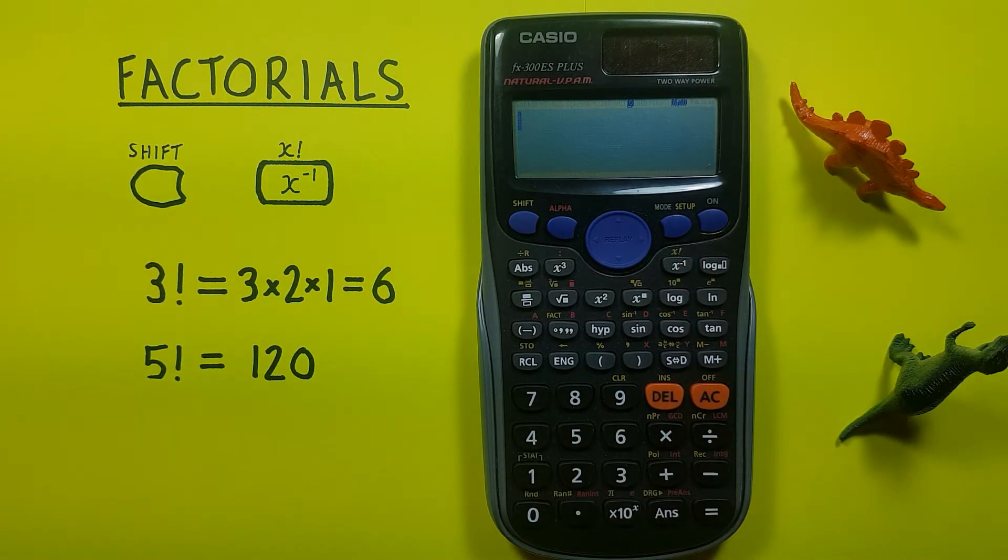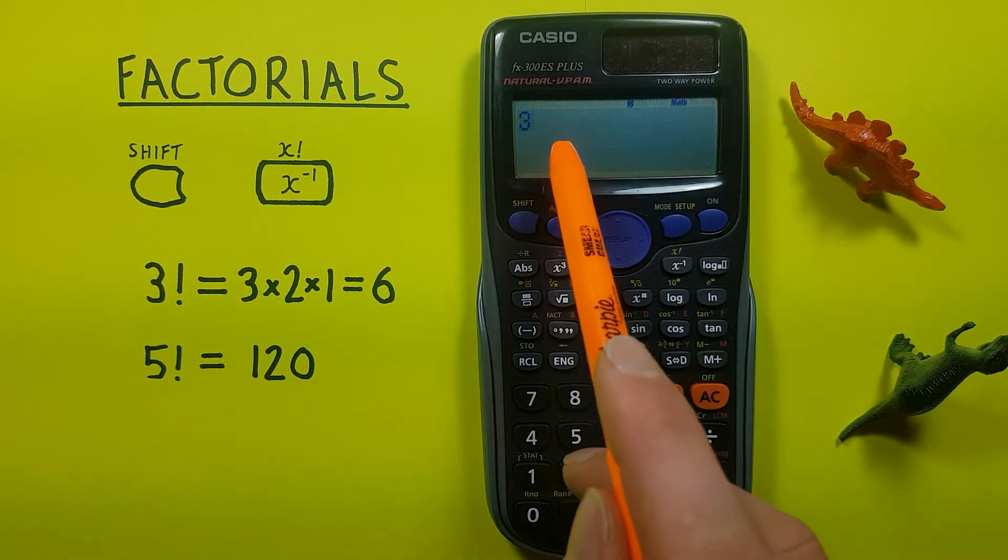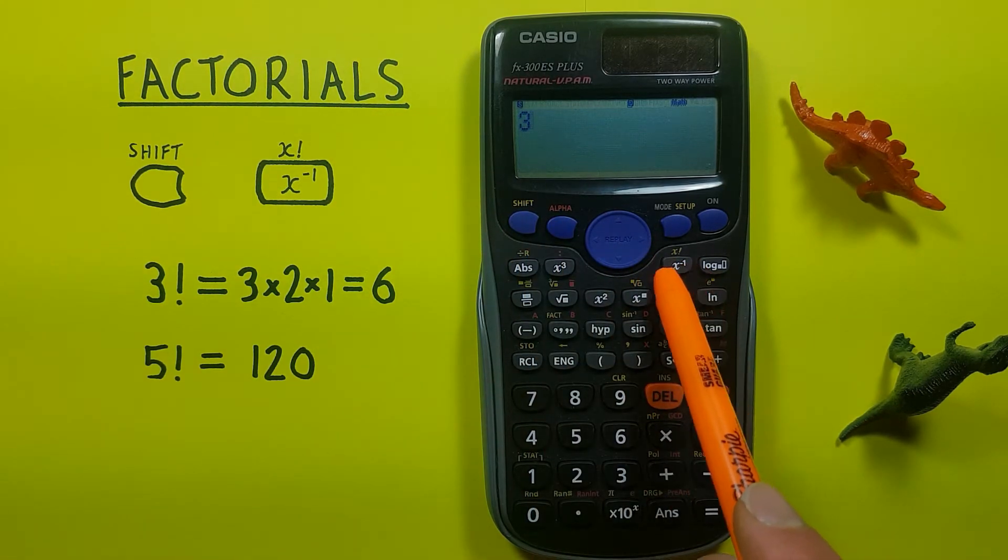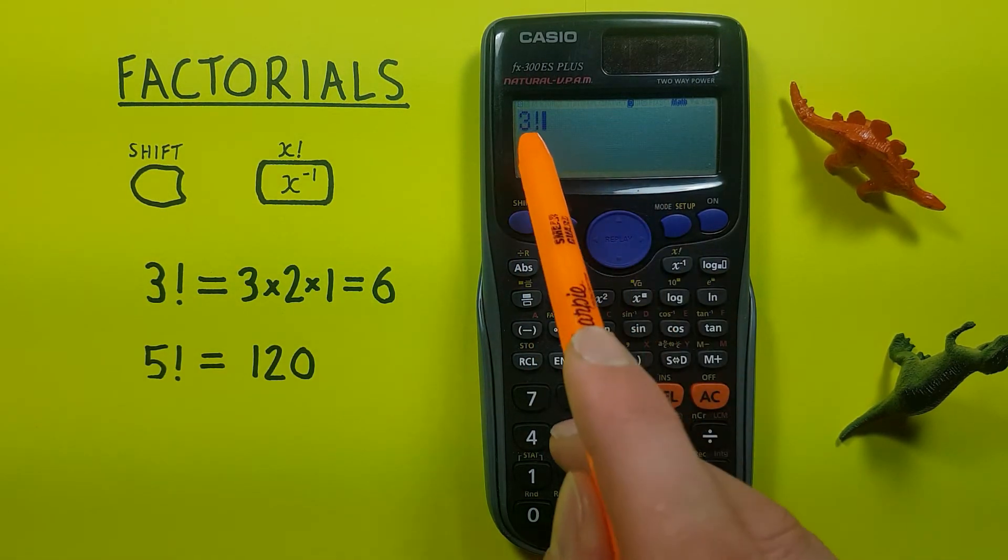Alright, so getting started, if we wanted to find out what 3 factorial was, we would do it like this: place the 3 on there and then press shift and then the x inverse key so that we get the little exclamation mark there. That's our factorial symbol.